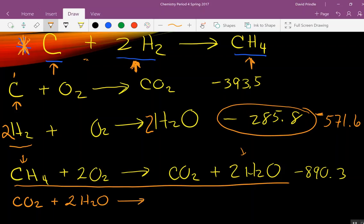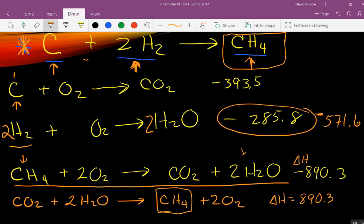We're going to flip this equation around. If you need something on the product side, you flip the equation around. And if we flipped it around, what happens to the sign on our delta H here? So, the delta H down here now is going to be 890.3.